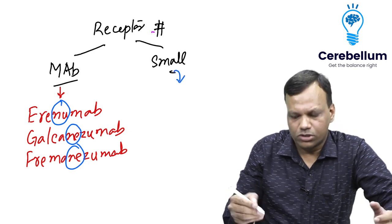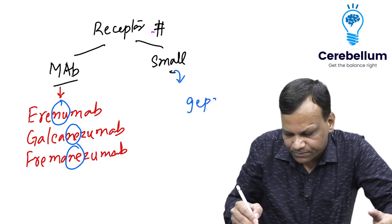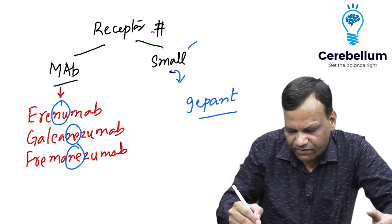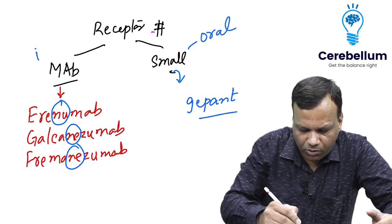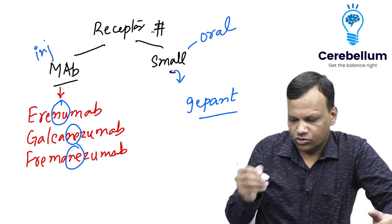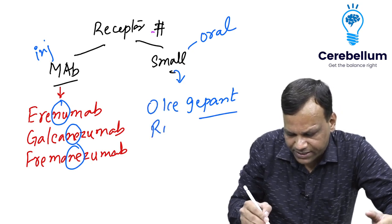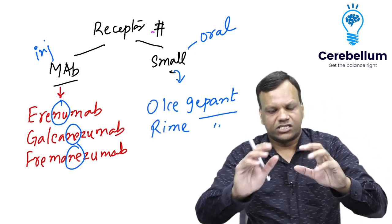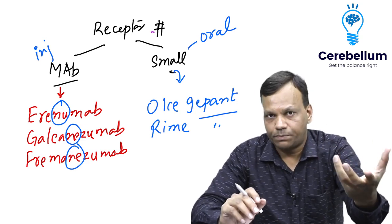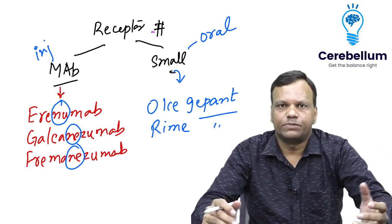Then there are some small molecules called gepants. The advantage is gepants can be given orally whereas monoclonal antibodies are injectable drugs. Drugs ending with 'gepant' like olcegepant and rimegepant are small molecule antagonists of CGRP. All these drugs can be used in migraine.